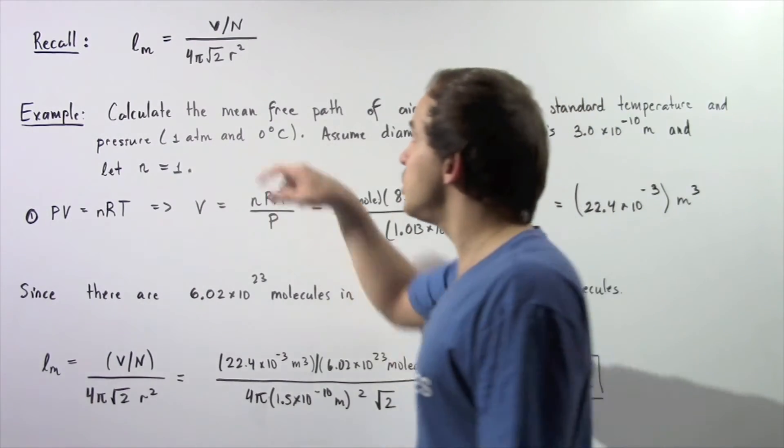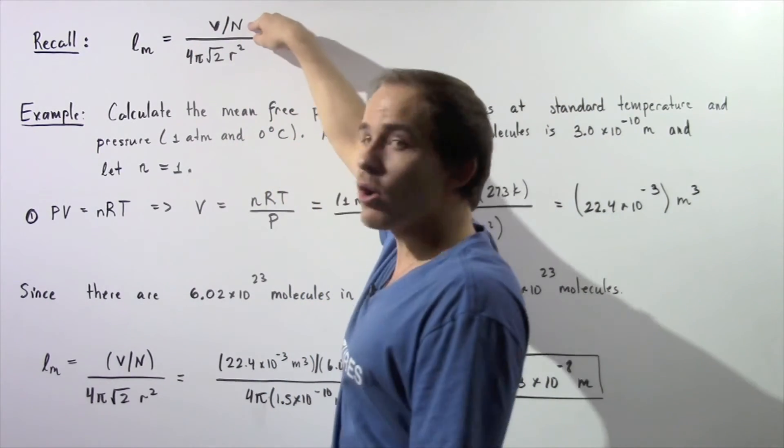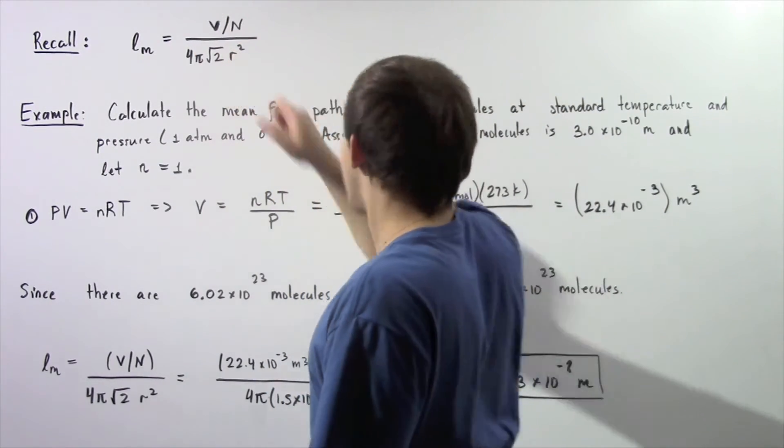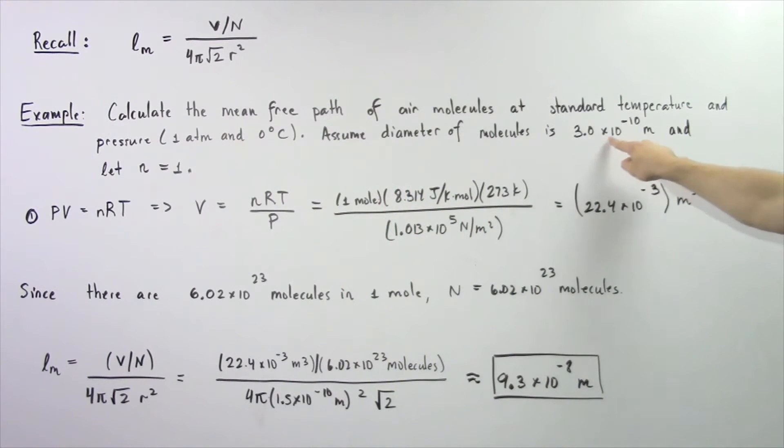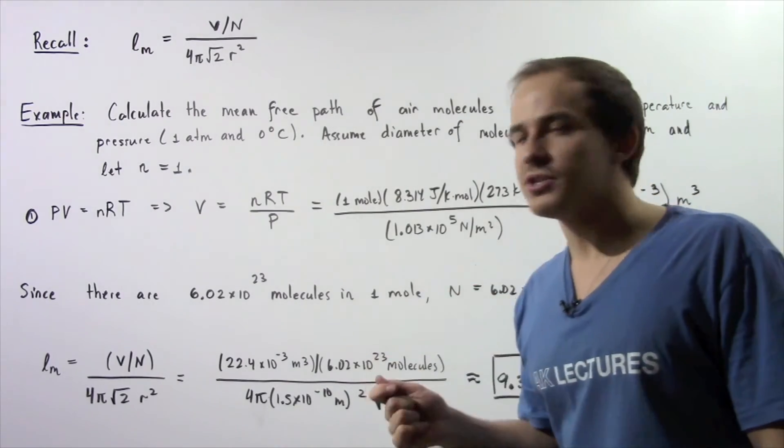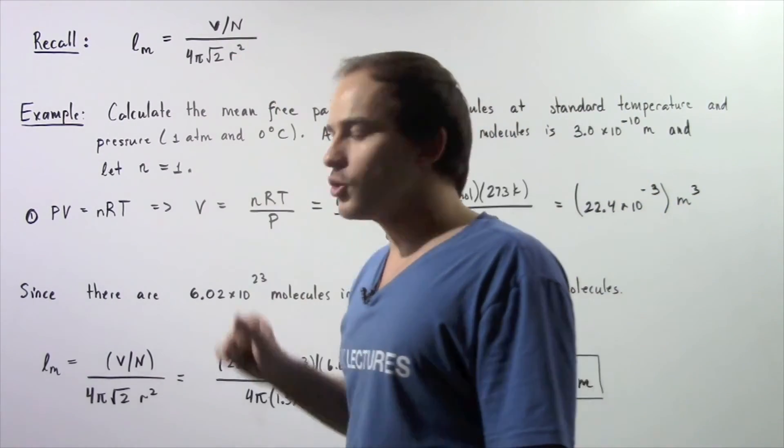Now because we know the volume and N, and because we know the radius is simply half of our diameter or 1.5×10⁻¹⁰ meters, we can use this equation.